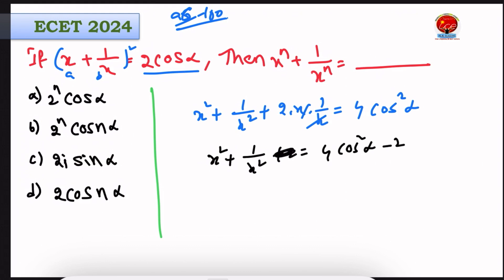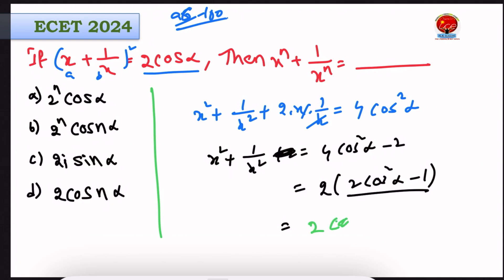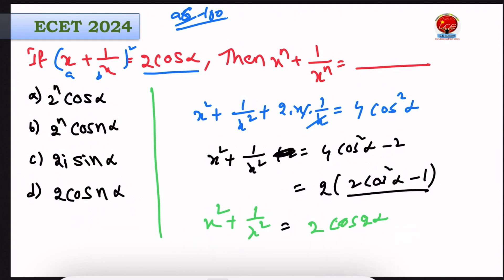So x squared plus 1 by x squared is equal to 4 cos squared alpha minus 2, which equals 2 cos squared alpha minus 1, giving us 2 cos 2 alpha. Observing the pattern, x power n plus 1 by x power n equals 2 cos n alpha. Option D is the right answer.